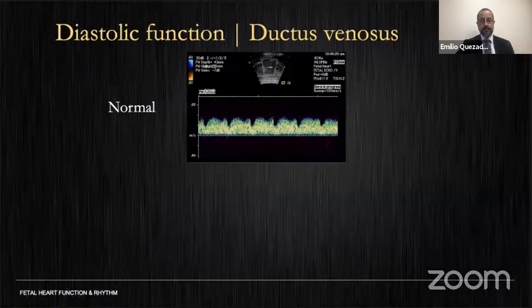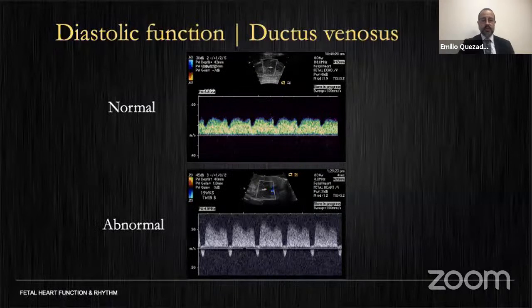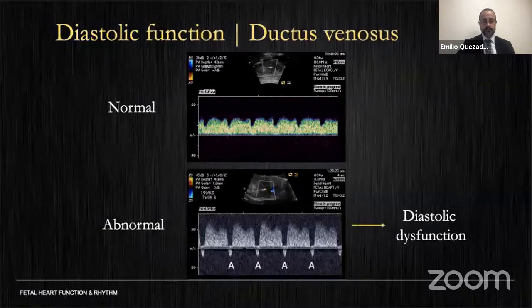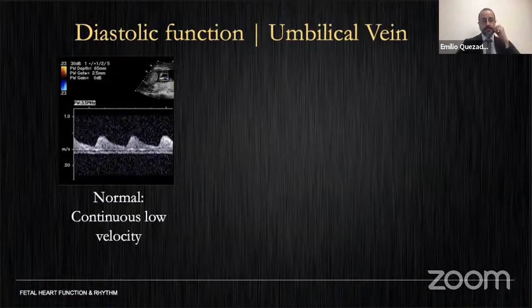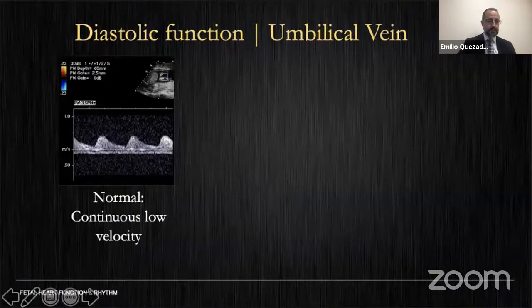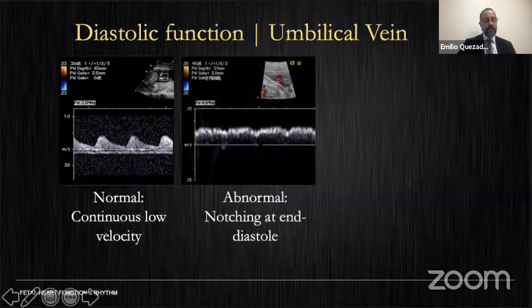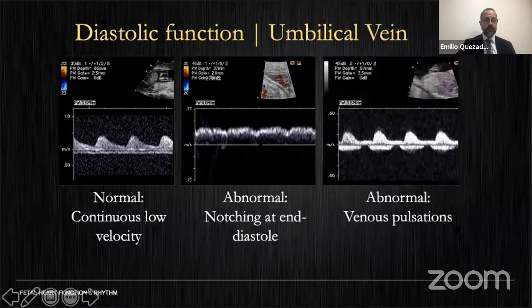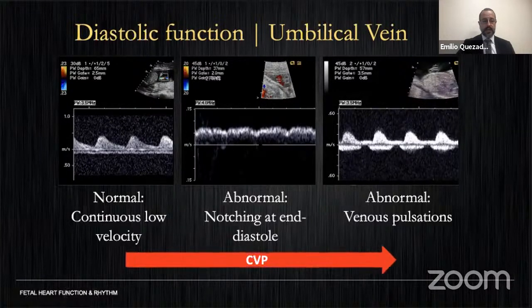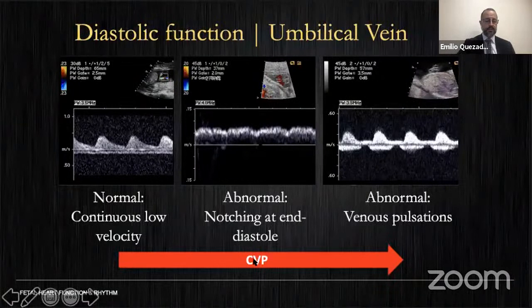Moving more distally, the ductus venosus shows a normal Doppler pattern in which any A-wave approaching baseline or reversal is abnormal and indicates increased atrial filling pressures. In the umbilical vein, normal flow is laminar, continuous, and low velocity. Abnormal findings initially show notching at end diastole, and very abnormal findings include venous pulsations or pulsatility — all indicating increasing central venous pressure as we progress from normal to abnormal.